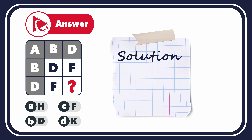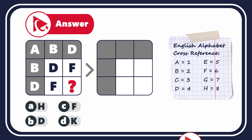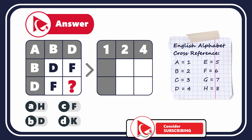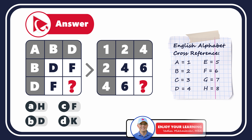To answer this question correctly, let's look at our matrix from a different dimension. Each letter here corresponds to a specific place in the alphabet, which can be represented by a number. For example, letter A equals 1, letter B equals 2, C equals 3, and so on. If we follow this logic, we can replace all letters in all three rows with numbers. For the first row, the numbers will be 1, 2, and 4. For the second row, the numbers would be 2, 4, and 6. And for the third row, the numbers will be 4, 6, and the missing number.